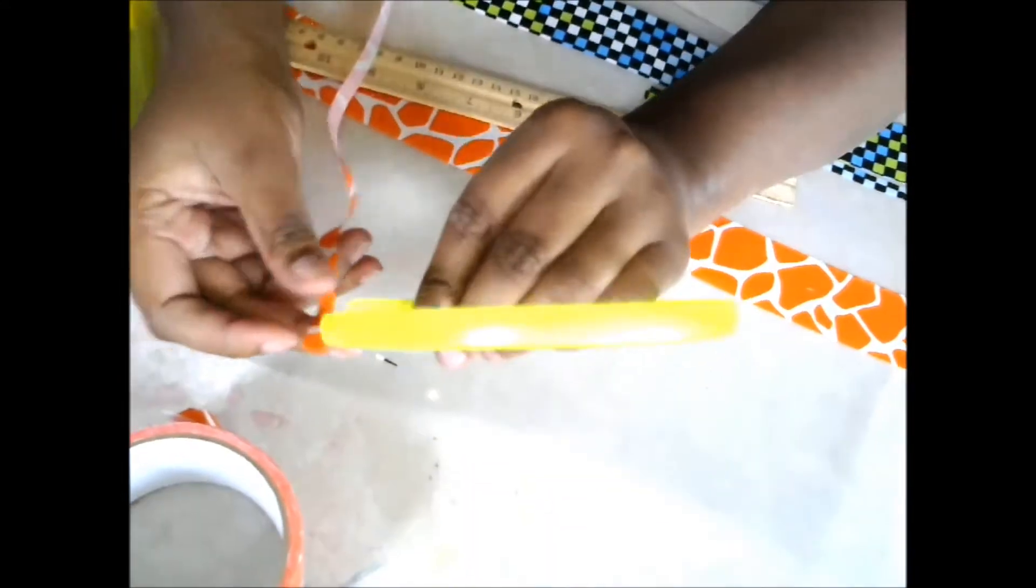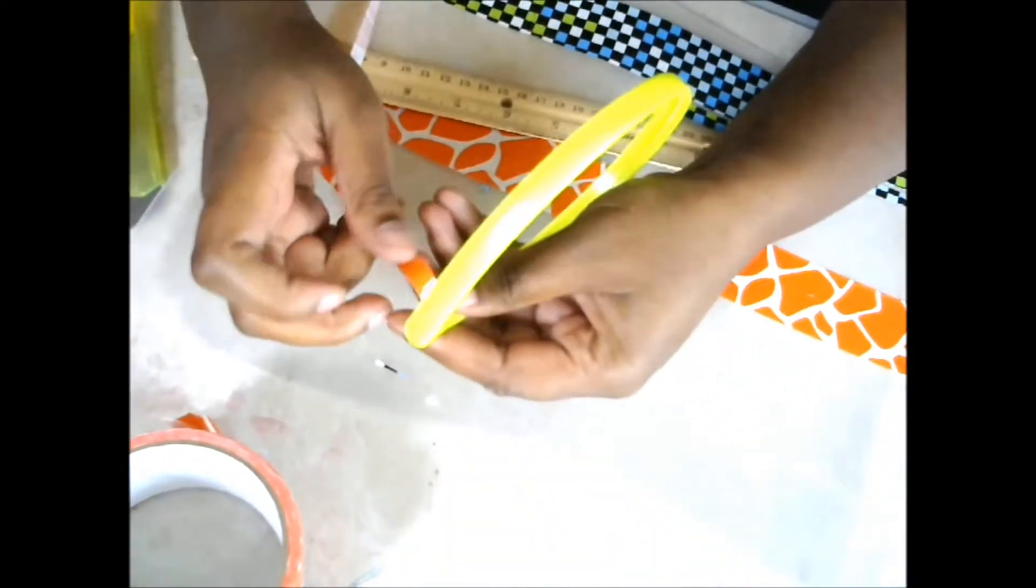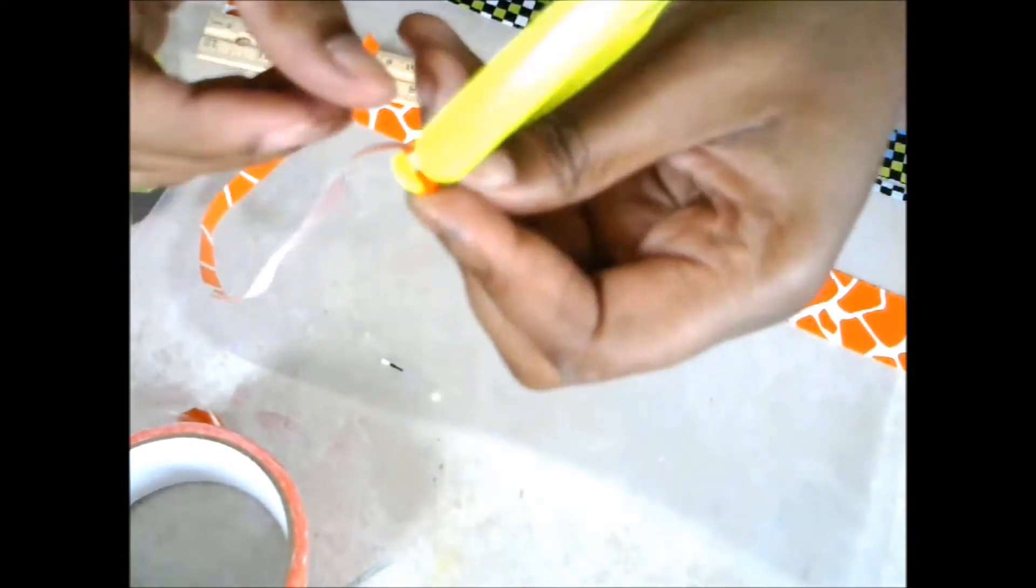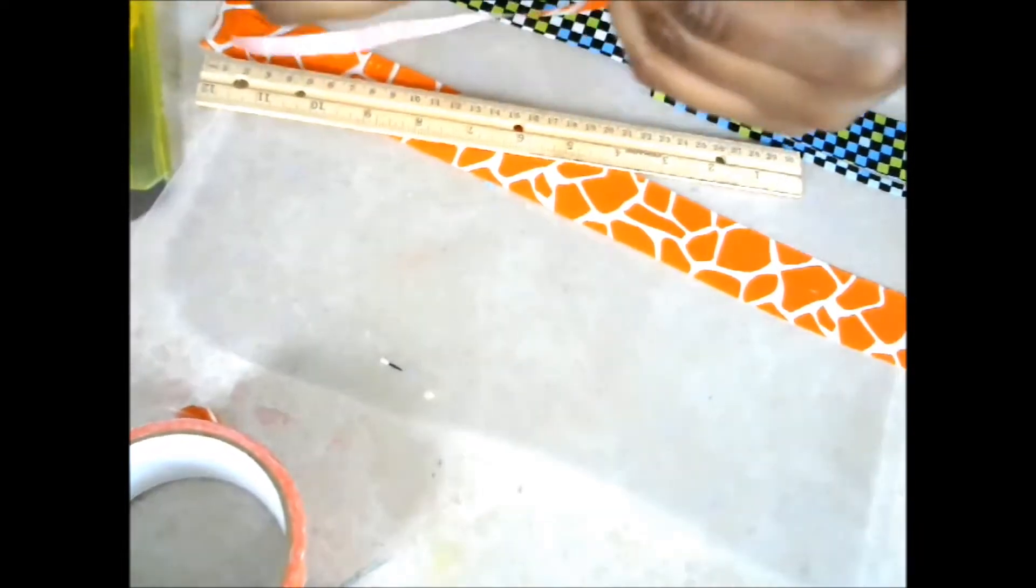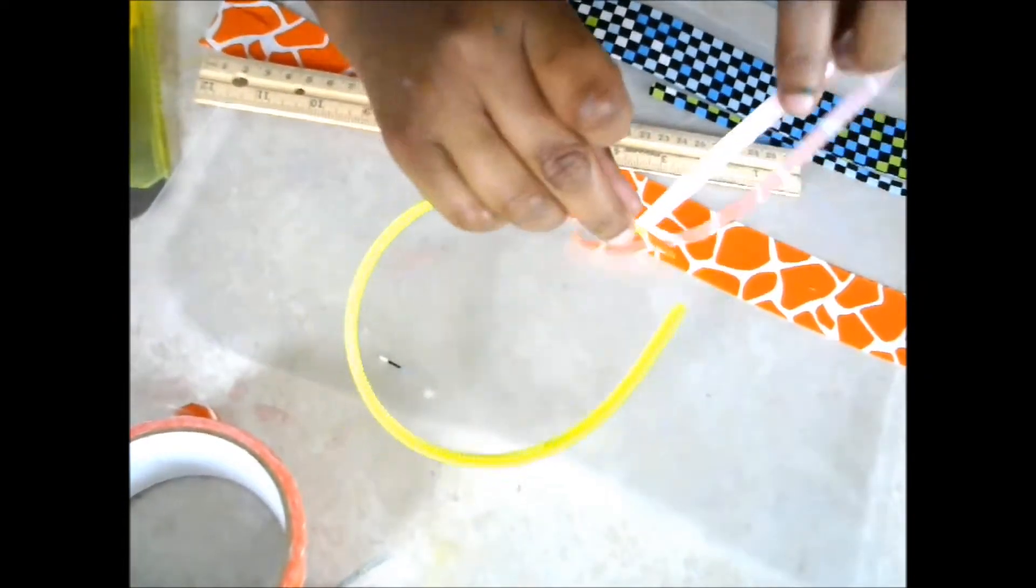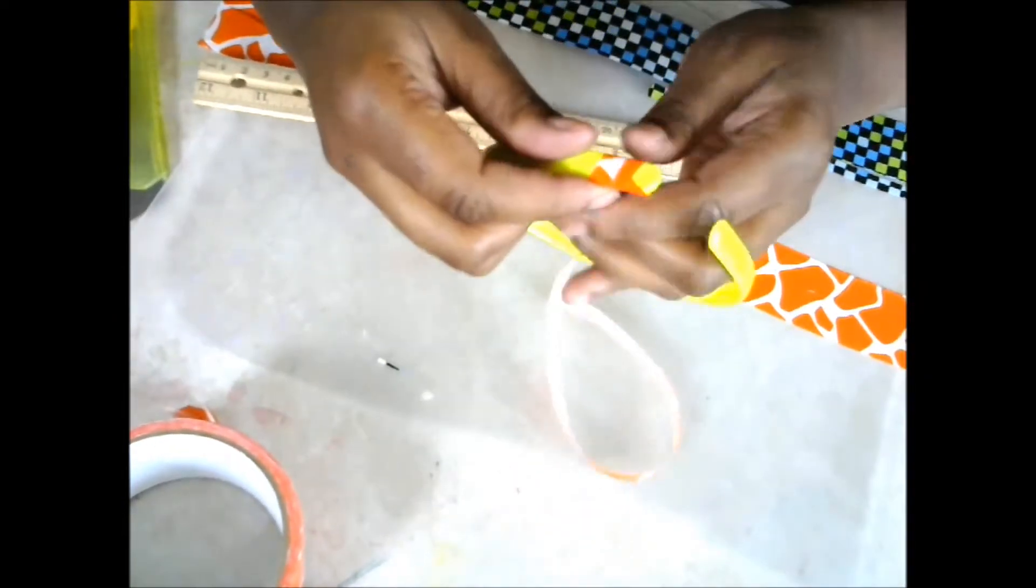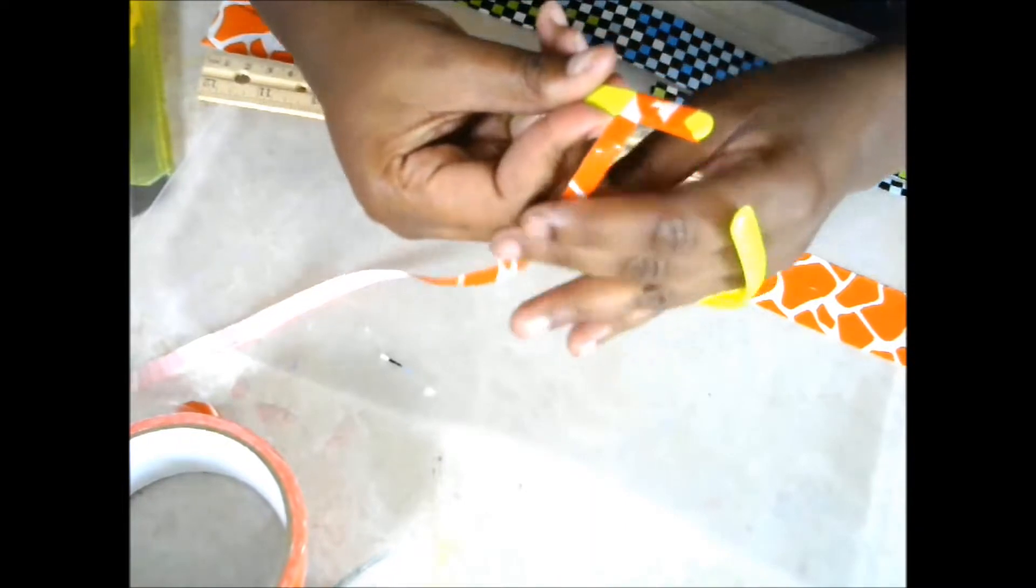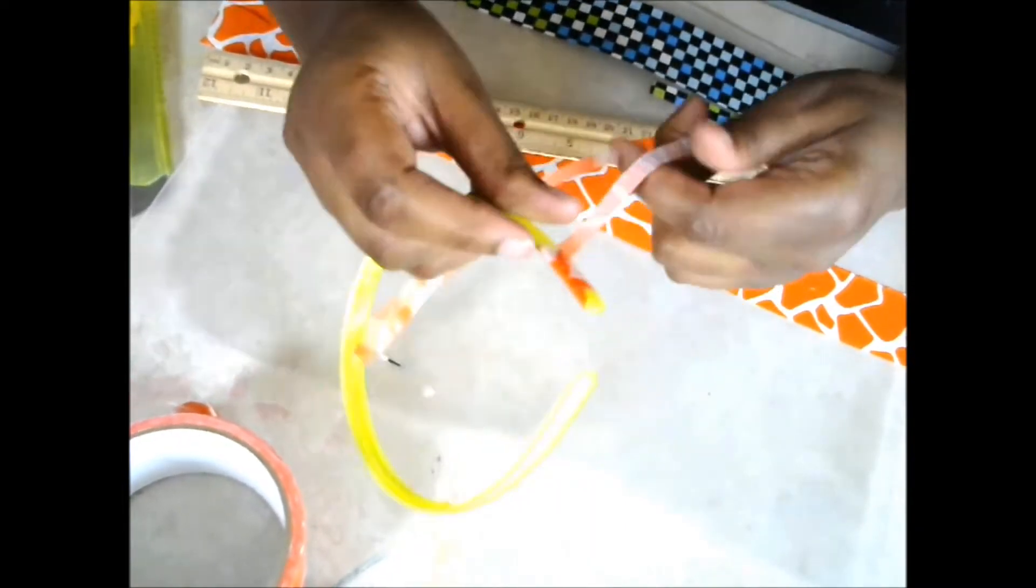All you're going to do is start at the very tip here and start wrapping it around. Don't worry if that little edge sticks out, we'll fix that up. Then you're just going to make diagonal little strips. I like mine to go at an angle. You could totally do it straight. It really doesn't matter. It looks great either way. That's the great thing about duct tape.